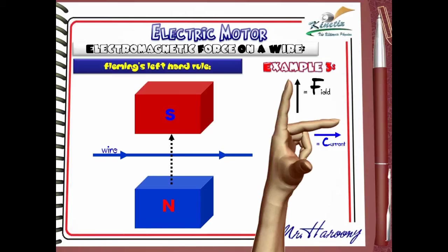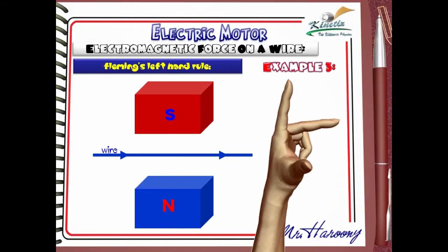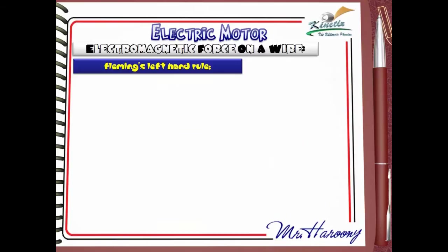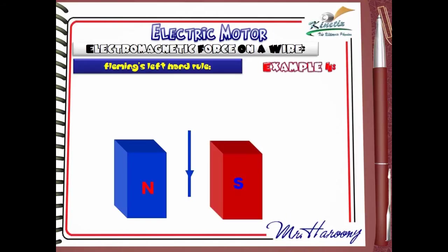The current is given by the second finger and it flows from left to right. According to these directions, Fleming's Left Hand Rule shows that the wire will be pushed out of the page, as shown by the thumb.